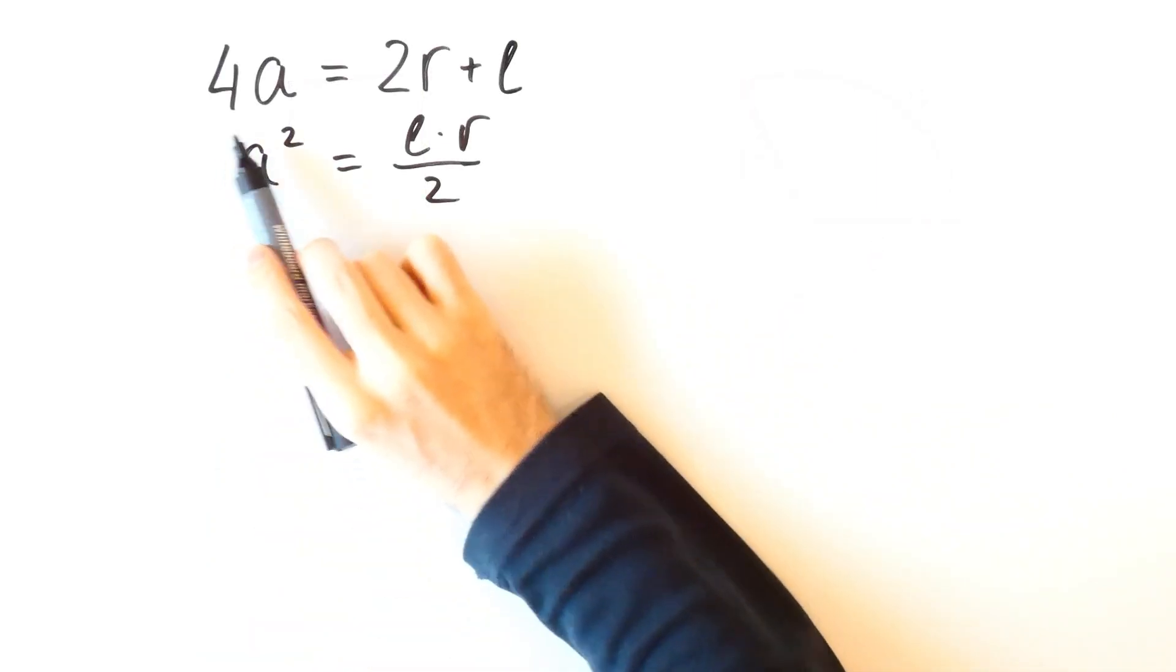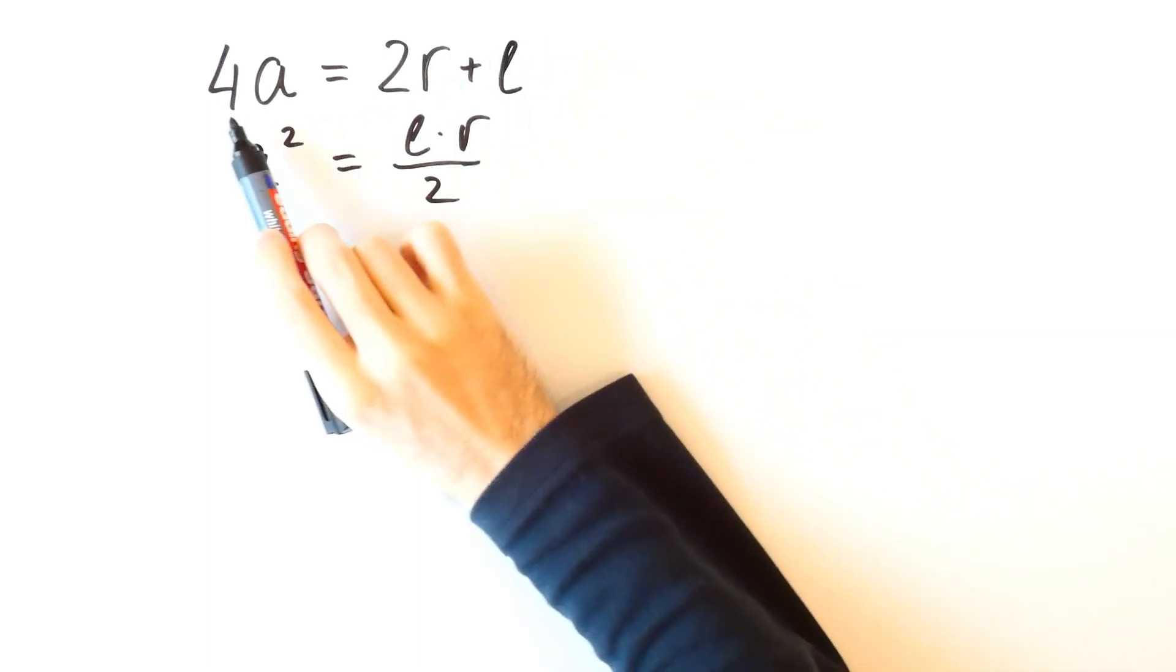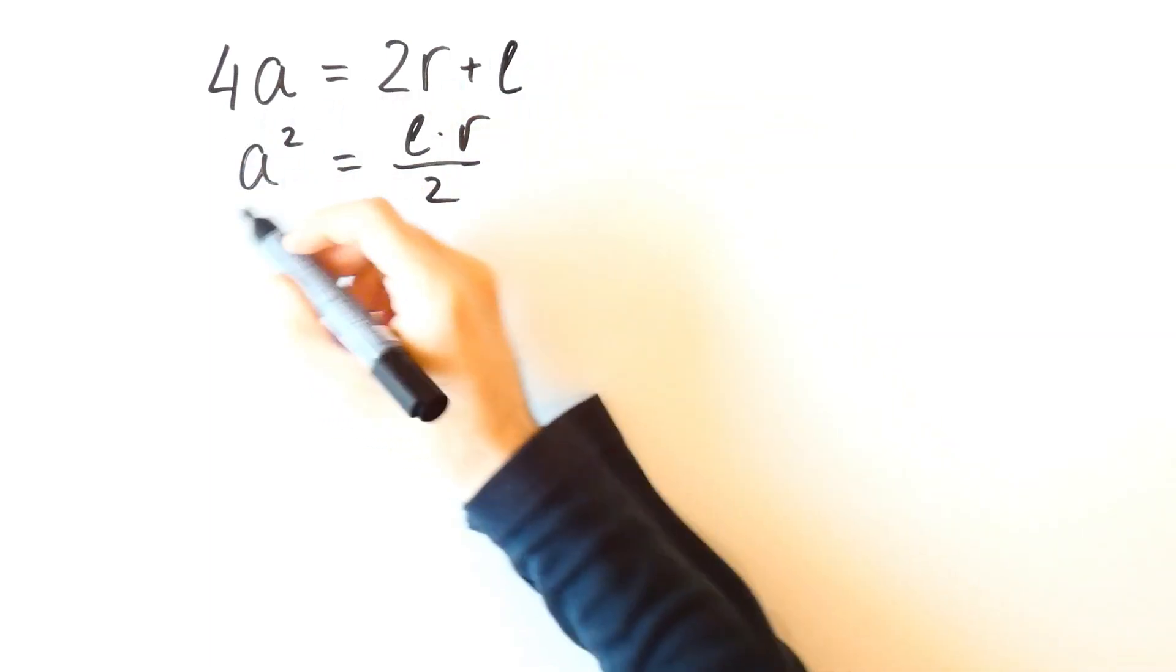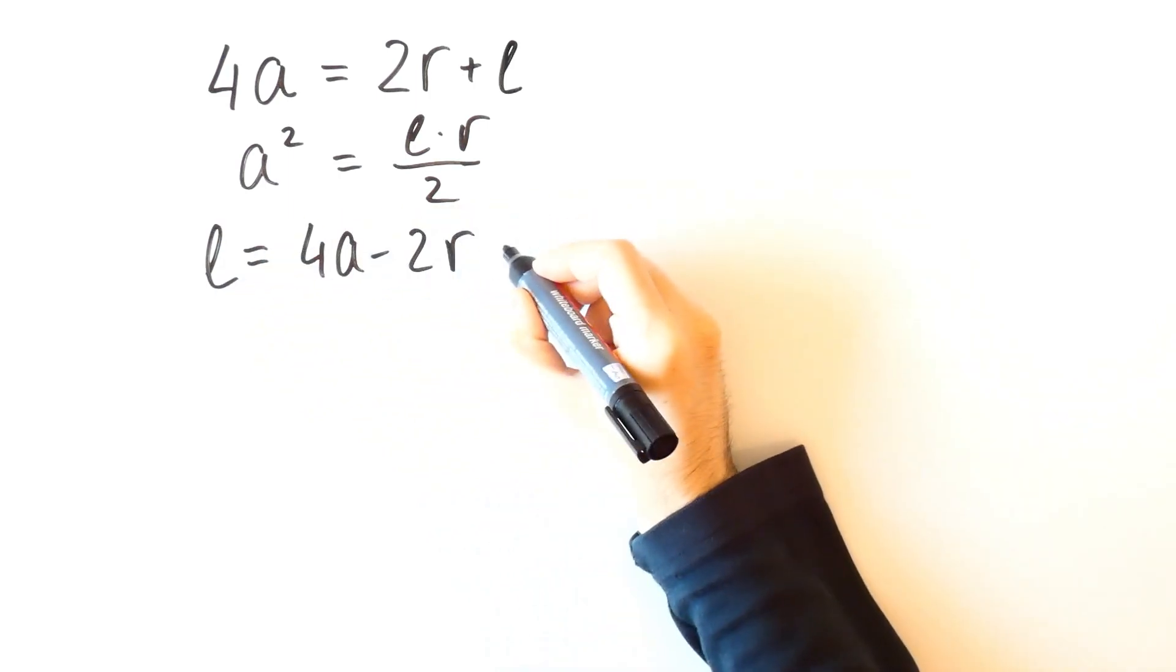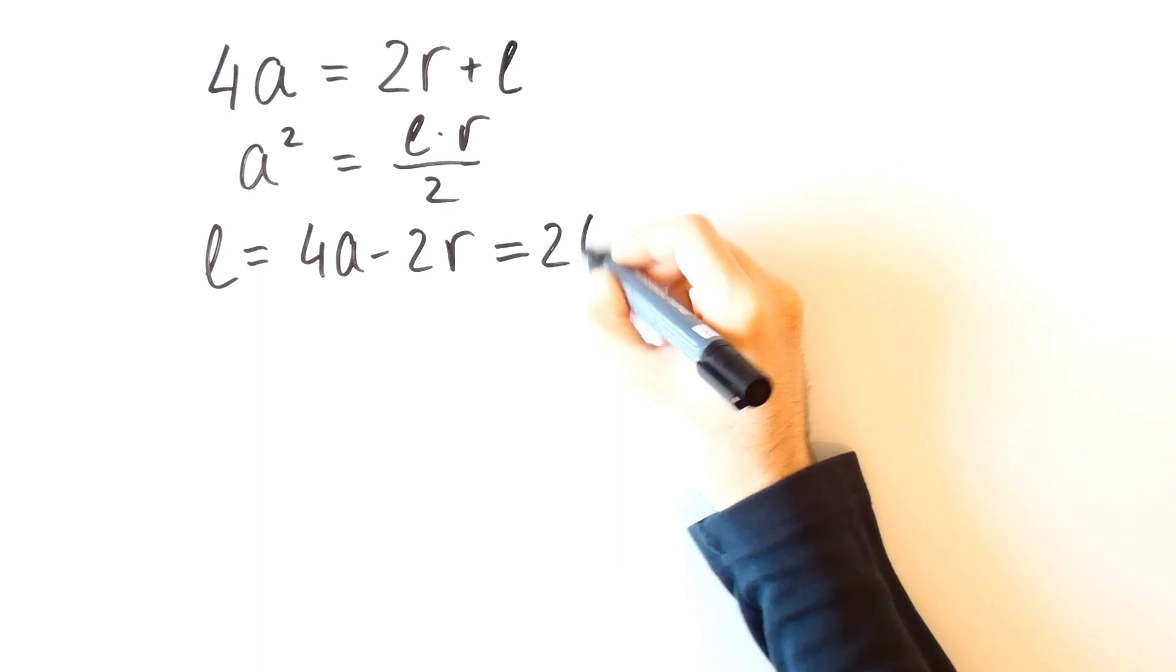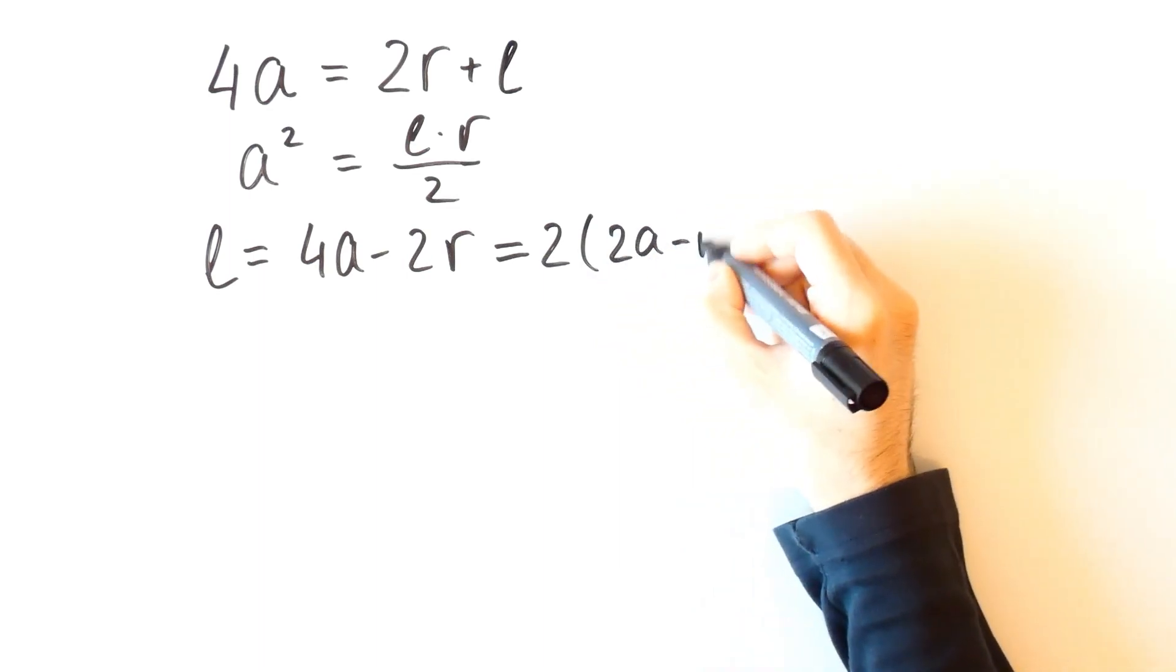From the first equation we have that L is equal to 4A minus 2R. And that is equal to 2 times 2A minus R.